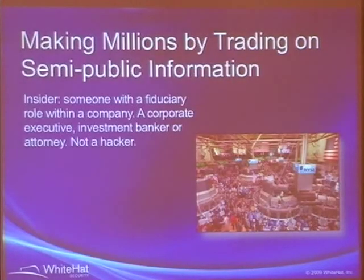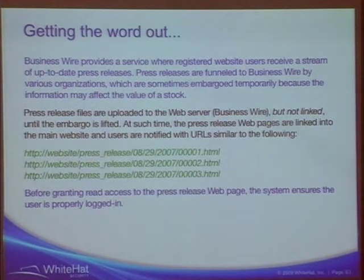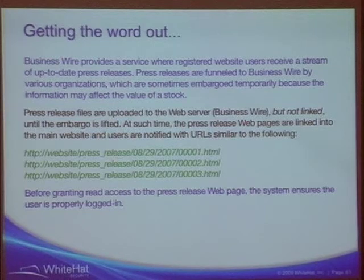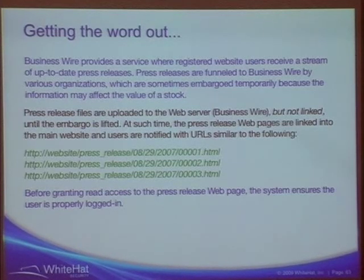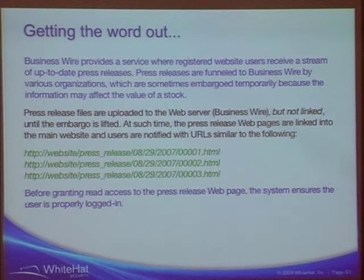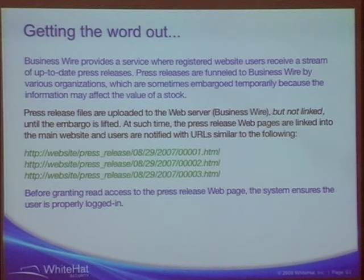Let's move into nine figures — making money another way. The stock market is a little shaky these days but you can make money on the way up or on the way down. How do you make money trading on semi-public information? How do you get semi-public information? This is another real-world case study. Business Wire has two types of subscribers: companies issuing press releases and subscribers who consume them. When you put a press release on Business Wire, they give you a nice predictable URL under press releases — dated and ID'd. You can put an embargo date on it saying don't link to the website until this date.